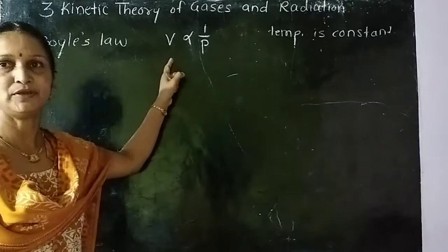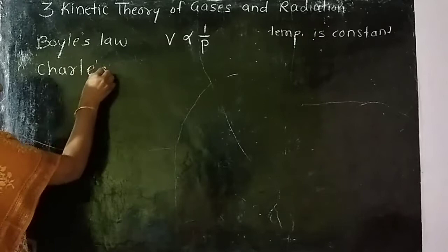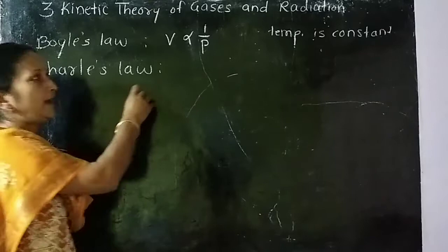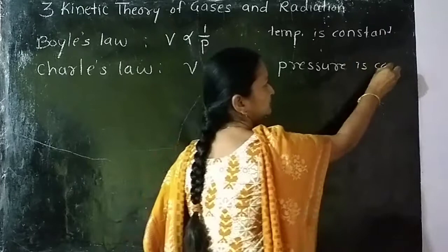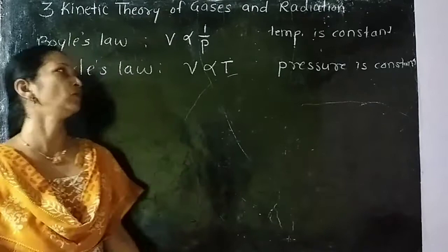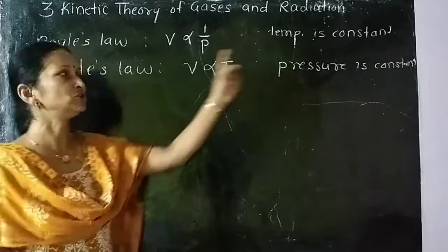Second is Charles' Law. Charles' Law states that volume of a given gas is proportional to temperature. Here, pressure is kept constant. While studying two variables, the third variable is kept constant. So V proportional to T at constant pressure. This is Charles' Law.